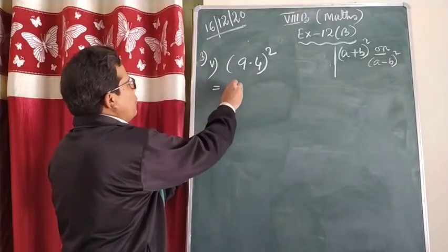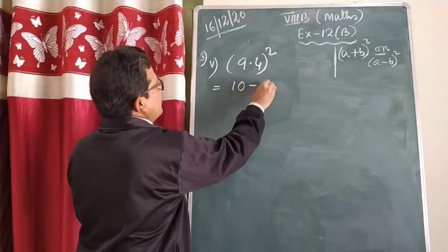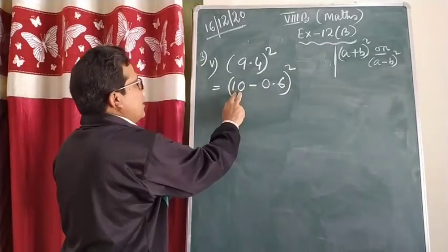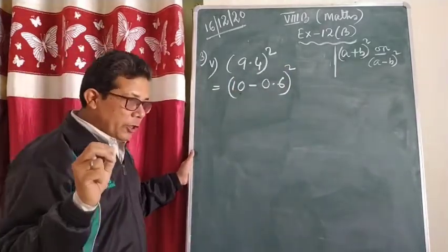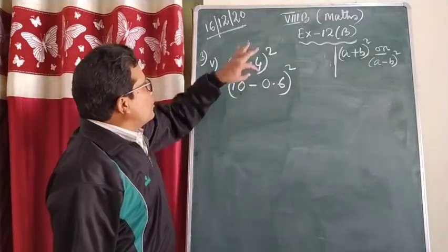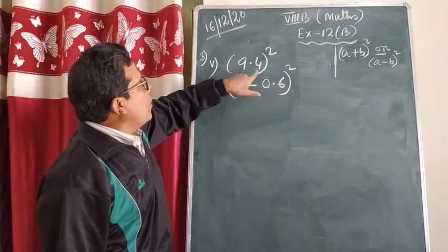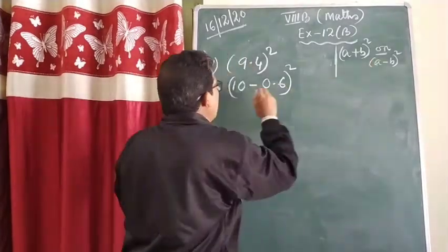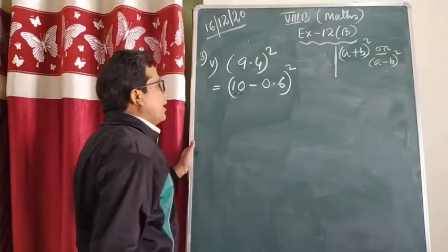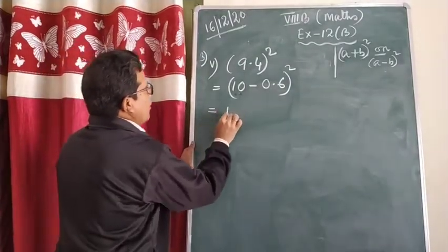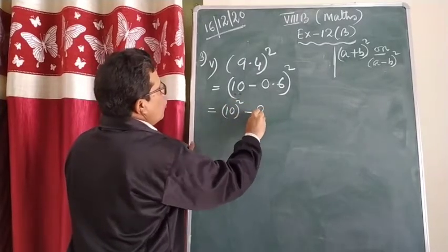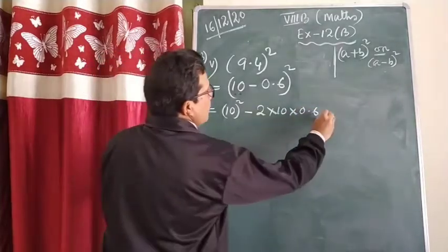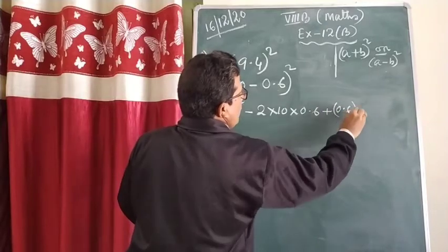Now again one decimal number — easy. I told you to take the first number with zero. So 9.4, without changing the value, I write it as (10 - 0.6), because 10 minus 0.6 equals 9.4. So it is in the form of (a-b)², where a is 10 and b is 0.6. The formula is: first one squared, minus 2 into first one into second one, plus second one squared.